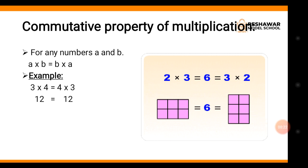We take two numbers — for any numbers a and b, hum koi bhi do number lete hain. Whole numbers وہ number ہوتے ہیں جو zero سے start ہوتے ہیں۔ یہ a اور b general names ہیں، ان کی جگہ پہ کوئی بھی value آ سکتی ہے۔ تو پھر a multiply b is equal to b multiply a — یعنی اگر ہم دو numbers کو multiply کریں پھر ان کے places change کر کے multiply کریں، means arrangement change کر کے multiply کر لیں تو دونوں سے same answer آئے گا۔